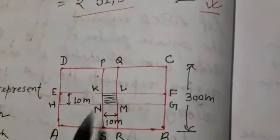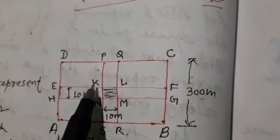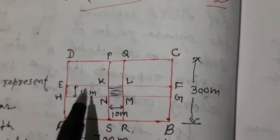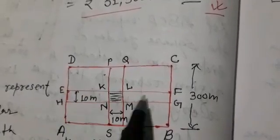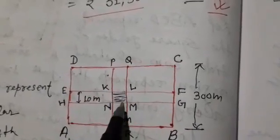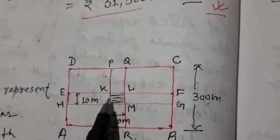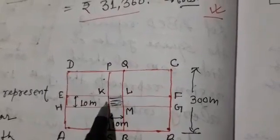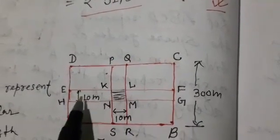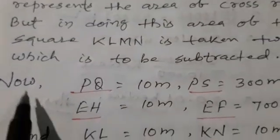Dear students, here we see the figure. Here, this part KLMN, when we find the area of both roads, then this part comes two times. So one time is needed to subtract from total area of both roads. So we write it in this way.